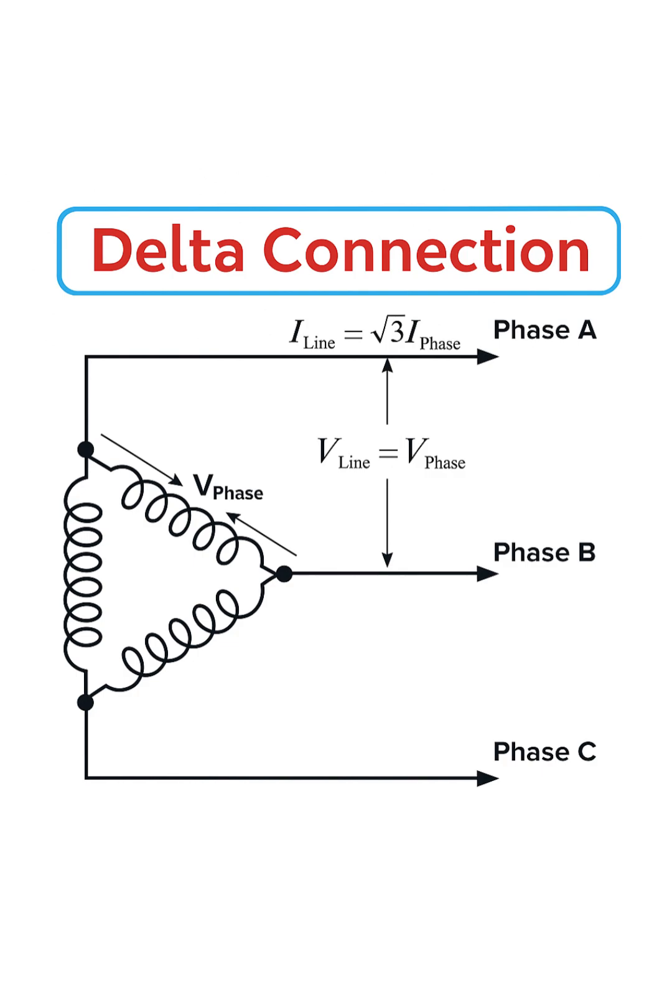Next, let's talk about current. The current flowing inside one of the coils is the phase current, or I phase. The current flowing in one of the main output lines is the line current, or I line.